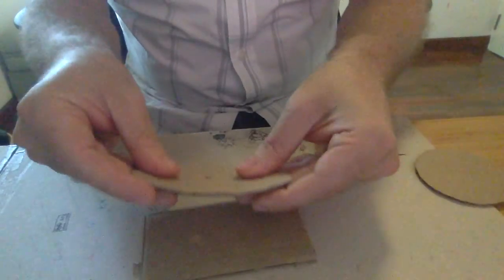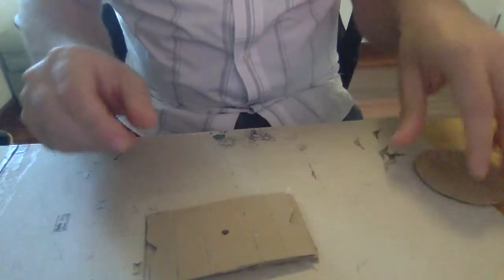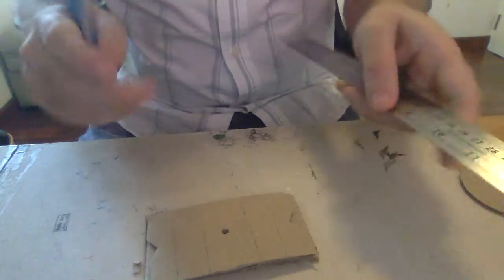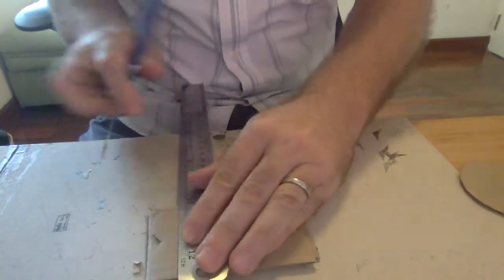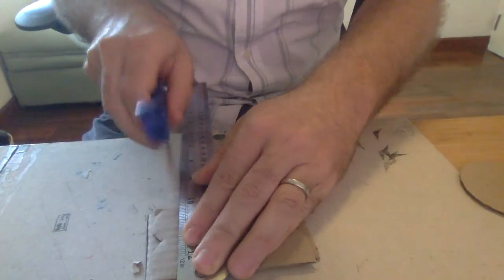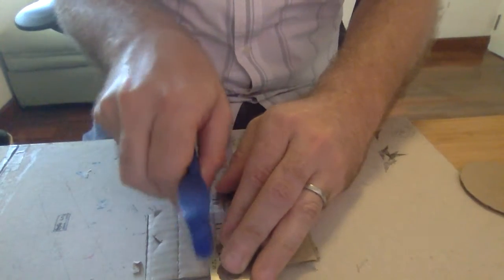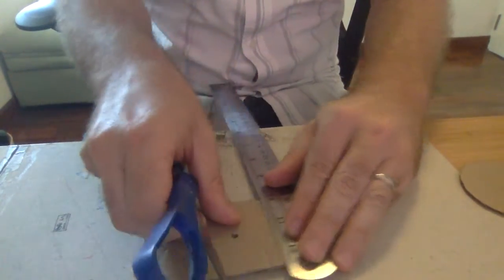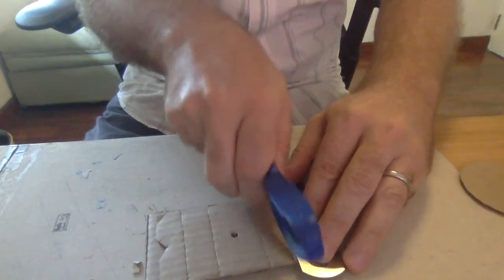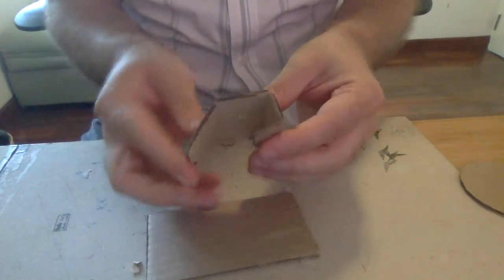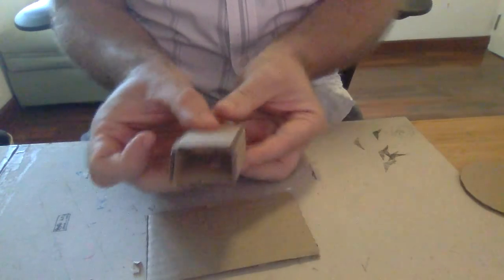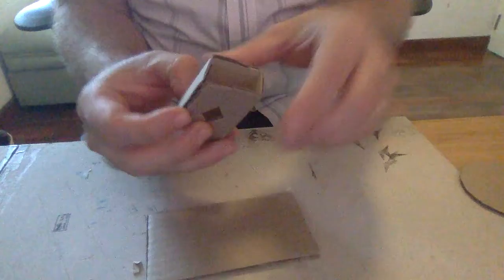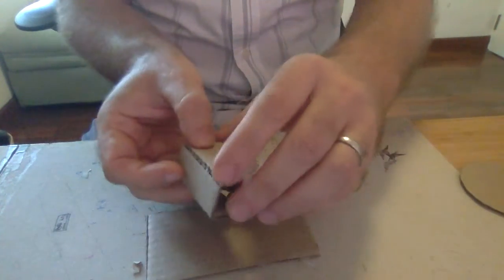So the way I did this is I got a piece of cardboard and I got my ruler and I scored along here. And by scoring it, it creates nice sharp edges and I can fold this over and it creates like a box.